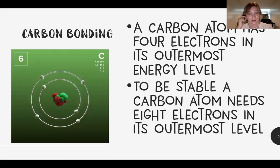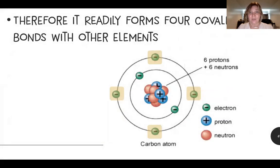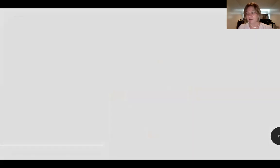To be stable, a carbon atom needs eight electrons in its outermost energy level. Therefore, it readily forms four covalent bonds with other elements. But carbon is really special in that it doesn't necessarily have to form single bonds.